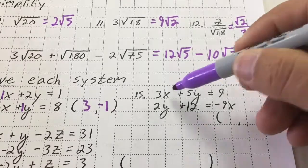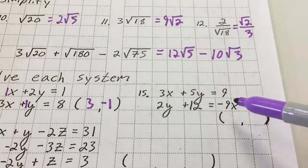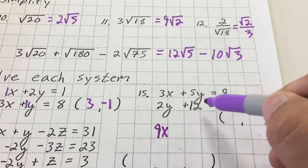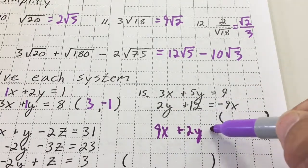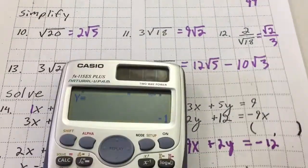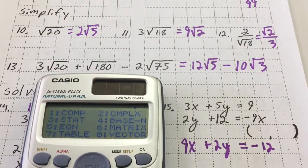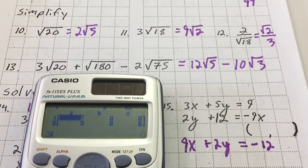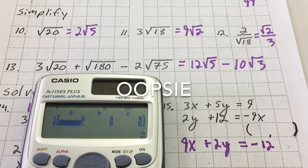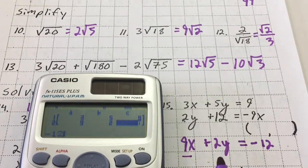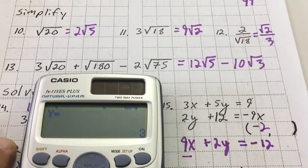For the next system, the bottom equation isn't in ax + dy = c form, so we need to rearrange it. Add 9x to both sides and move the 12 to the right side, giving negative 12. So go to mode 5, 1, and enter the coefficients 3, 5, 9 for the first equation and 9, 2, negative 12 for the second. The result is x equals negative 2, y equals 3.